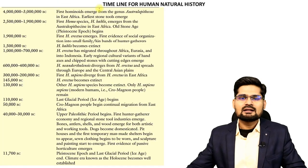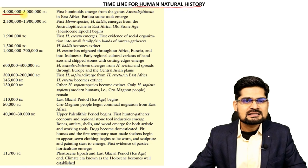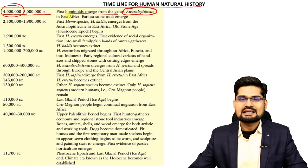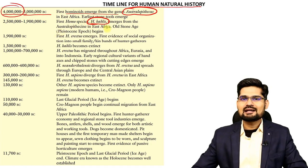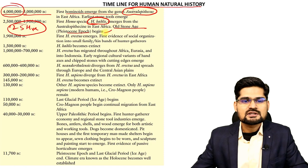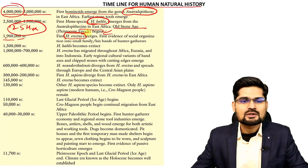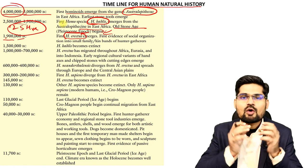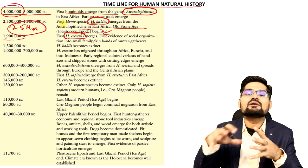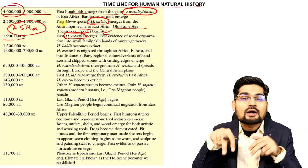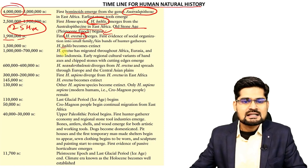Looking at the timeline of human natural history: hominoids emerged from the genus Australopithecus around 40–30 million years ago. Homo habilis appears next, with the old stone age and Pleistocene beginning around 2.5 million years ago. Around 1.9 million years ago is Homo erectus — meaning people started walking upright. The theory is they came down from trees as grasses evolved due to rising temperatures and climate change on the planet.